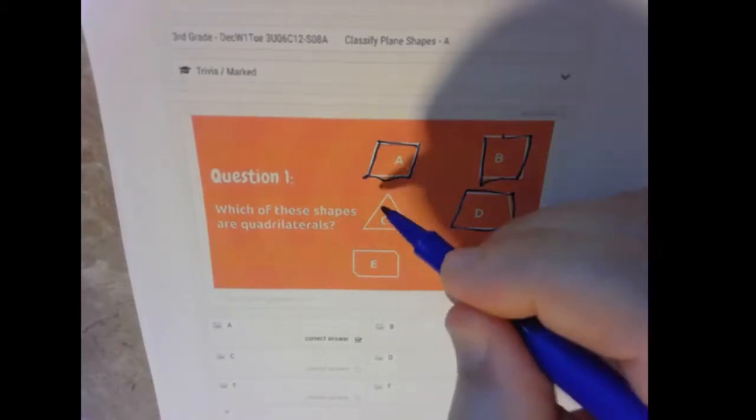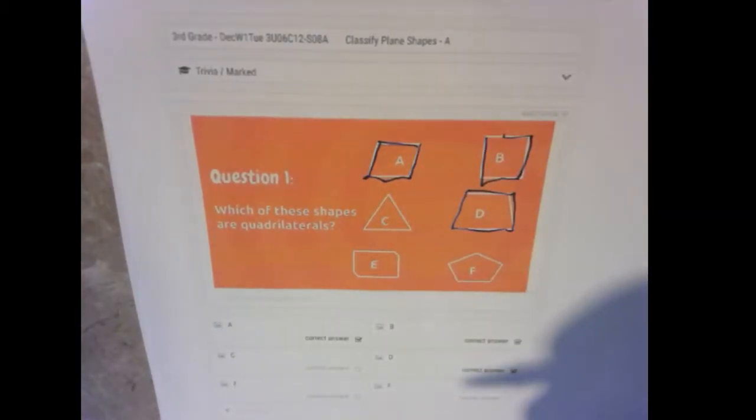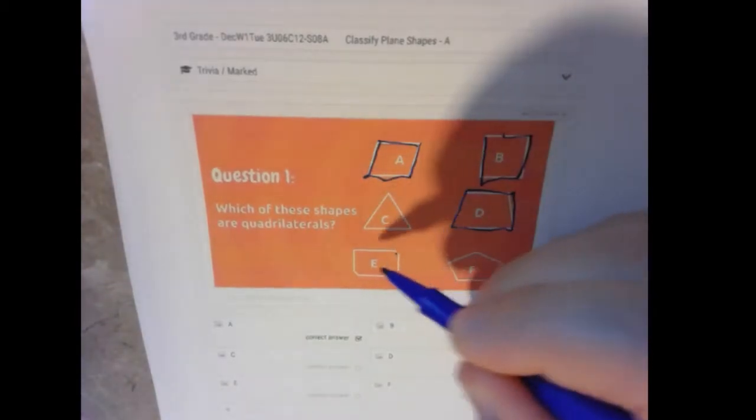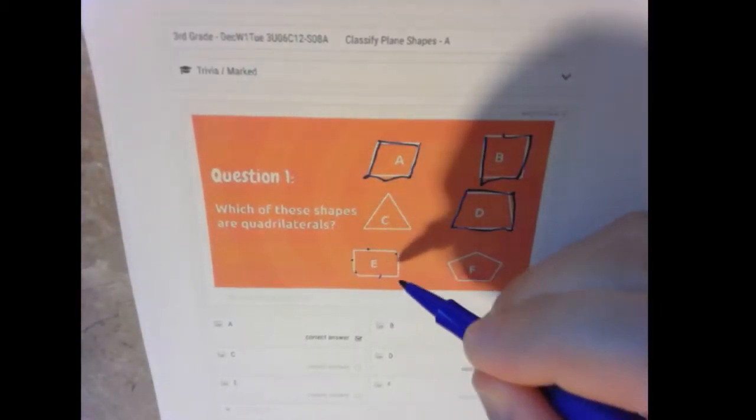This would be three, so that's not a quadrilateral. Here this has five. What does this one have? This one has one, two, three, four, five, six.